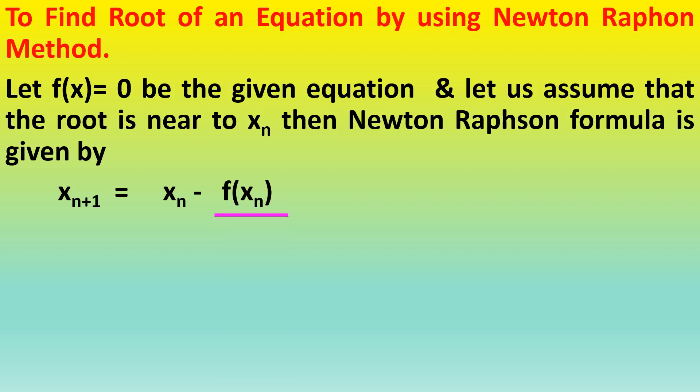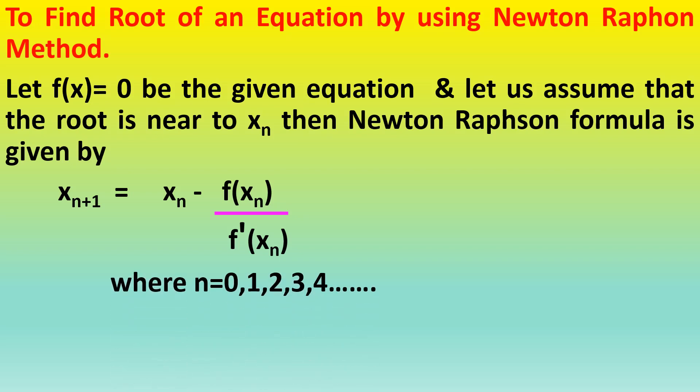Then the Newton-Raphson formula is given by: xₙ₊₁ = xₙ − f(xₙ) / f′(xₙ), where f′(xₙ) is the derivative of f(x) with respect to x, and n = 0, 1, 2, 3, 4, etc.